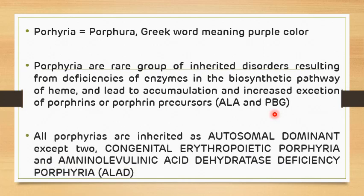The majority of all the porphyrias are inherited as autosomal dominant, except two — that is congenital erythropoietic porphyria and delta-aminolevulinic acid dehydratase deficiency porphyria. These two are inherited as autosomal recessive.